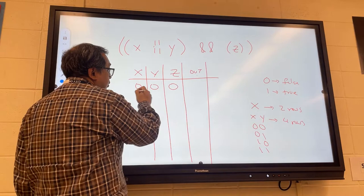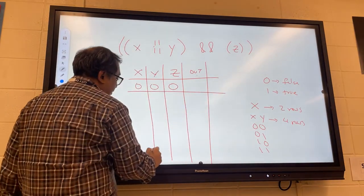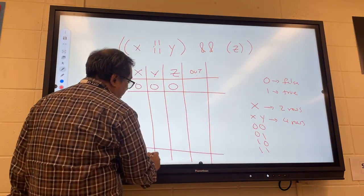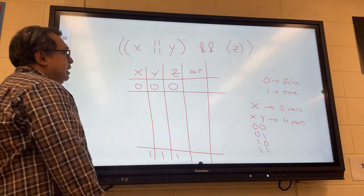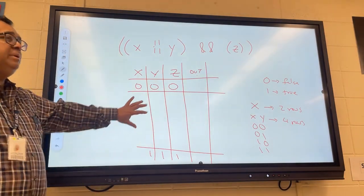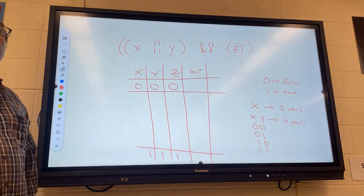So what we're going to do now is we're going to write them in binary order. So the first row is going to be zero, zero, zero. The last row is going to be one, one, one. And now I would like you to take out a piece of paper and fill in the missing six rows in order if you can.